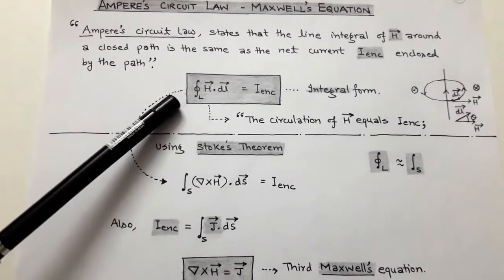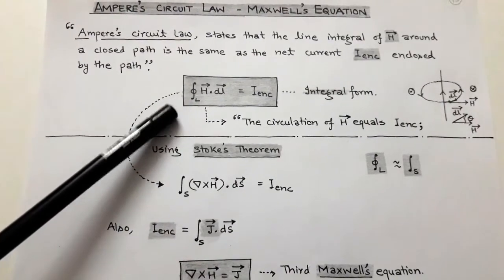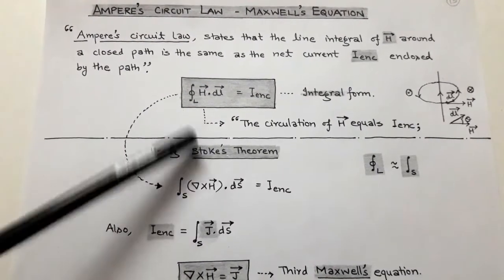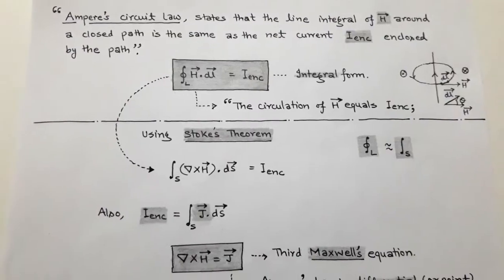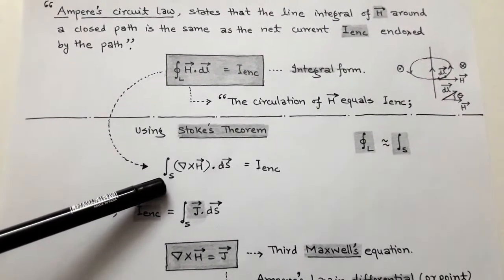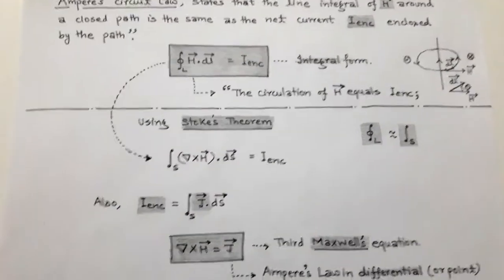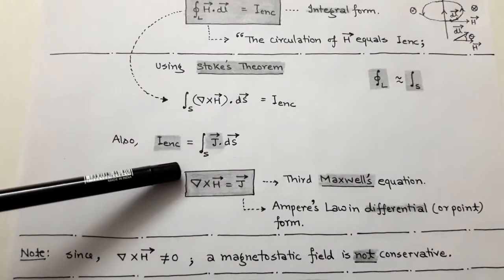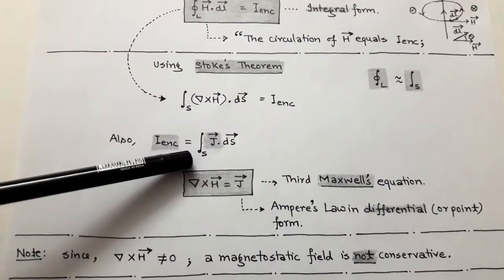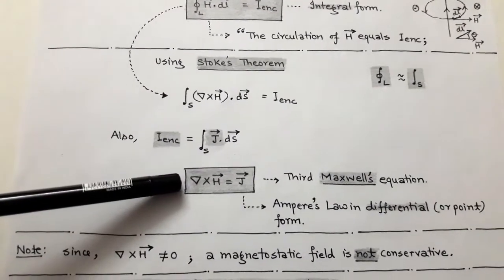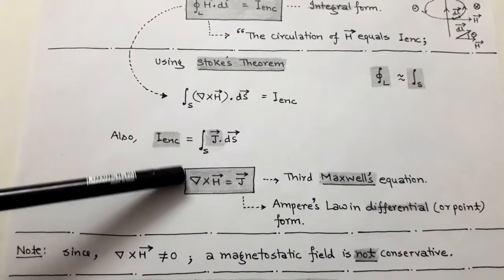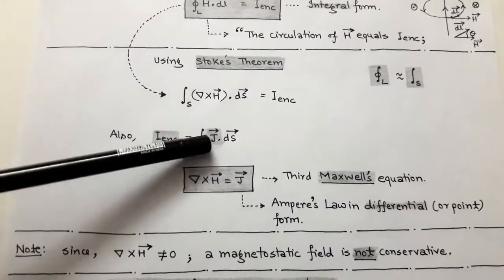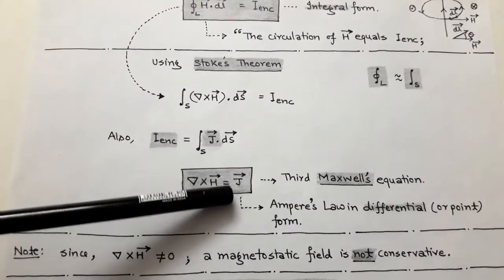Here we apply Stokes' theorem. According to Stokes' theorem, the closed line integration of H dot dL equals the surface integration of curl of H dot dS. After applying Stokes' theorem, the left side becomes the surface integration of curl of H dot dS, which equals I enclosed. We can also define the current in terms of current density: I enclosed equals the surface integration of J dot dS, where J is the current density. After equating, we find that curl of H equals J vector, meaning the circulation of H equals current density J vector.